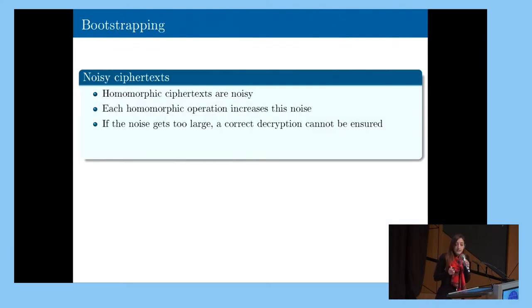So homomorphic ciphertexts contain some noise that, at the beginning, is very small when we encrypt them. The problem is that every time we perform a computation, which is an addition or mainly multiplications, this noise starts growing. If it reaches a certain amount after a certain number of operations, if we don't control this noise, the ciphertext will not decrypt in a correct way.